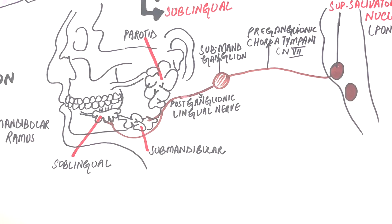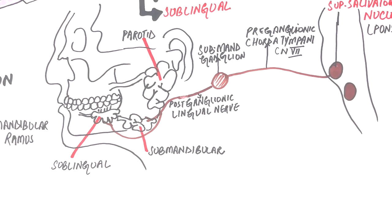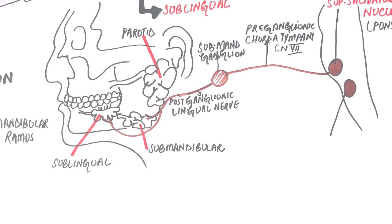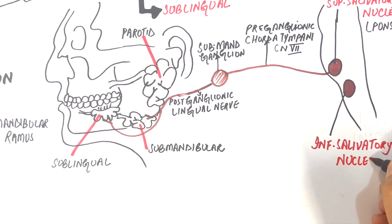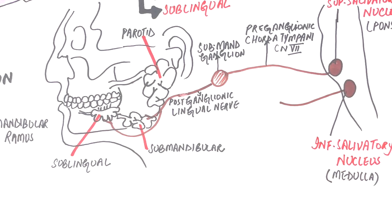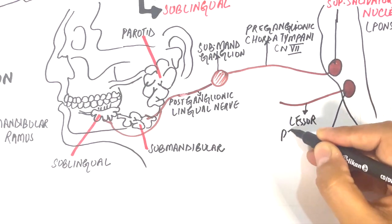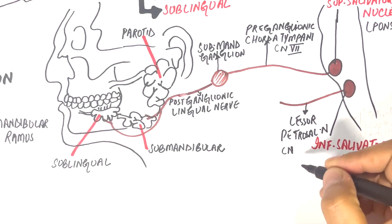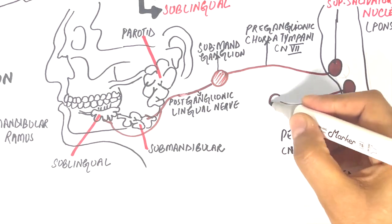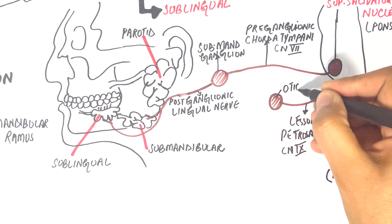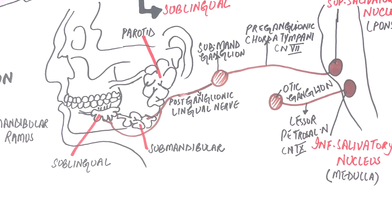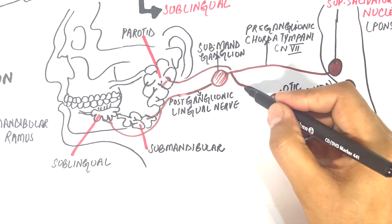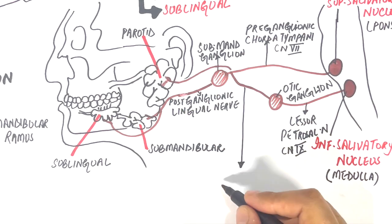The preganglionic fibers for the parotid gland come from the inferior salivatory nucleus in the medulla in the form of the lesser petrosal nerve, a branch of the ninth cranial nerve or the glossopharyngeal nerve. Lesser petrosal nerve, as it moves forward, synapses in the otic ganglion and then innervates the parotid gland through the postganglionic fibers of the auriculotemporal nerve, a branch of the mandibular division of the trigeminal nerve.